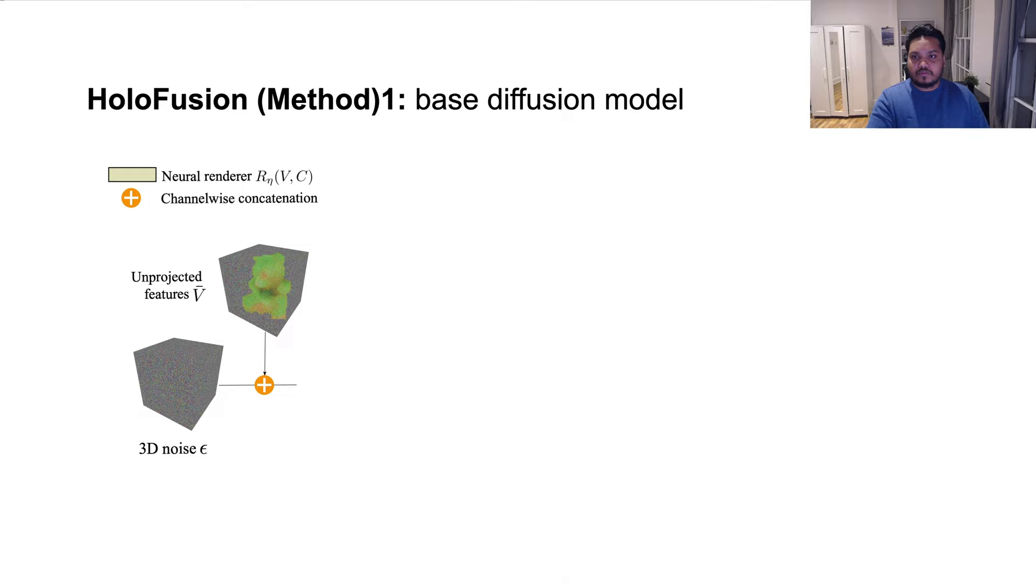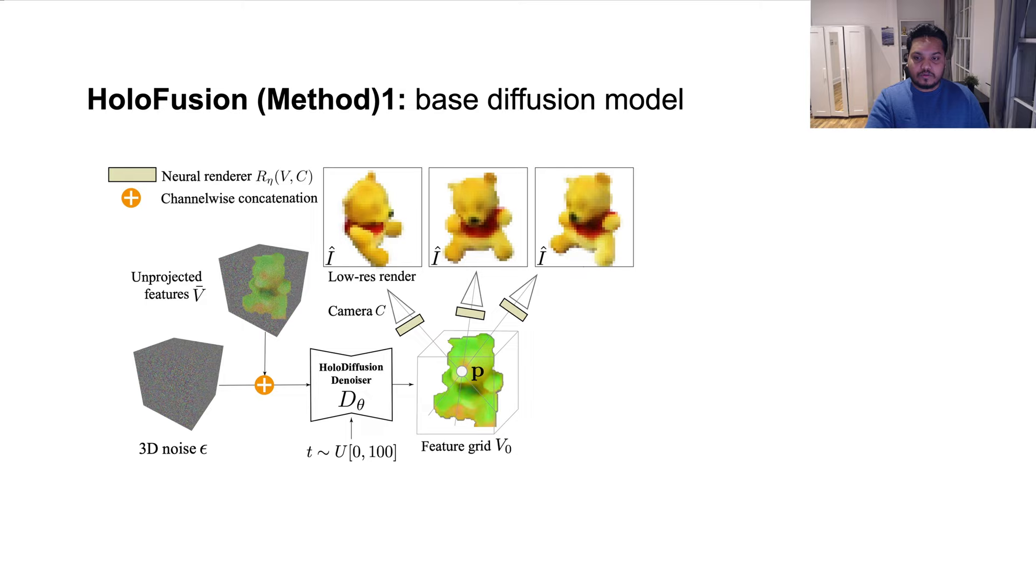This concatenation is then input to the base 3D diffusion network dθ, which predicts the features for the clean and fully formed 3D feature grid V0, following which we render some target views in order to optimize the stage 1 photometric loss.